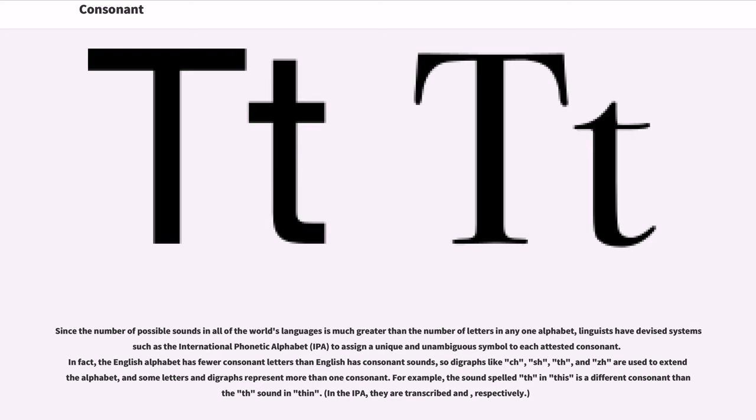For example, the sound spelled TH in 'this' is a different consonant than the TH sound in 'then'. In the IPA, they are transcribed θ and ð, respectively.